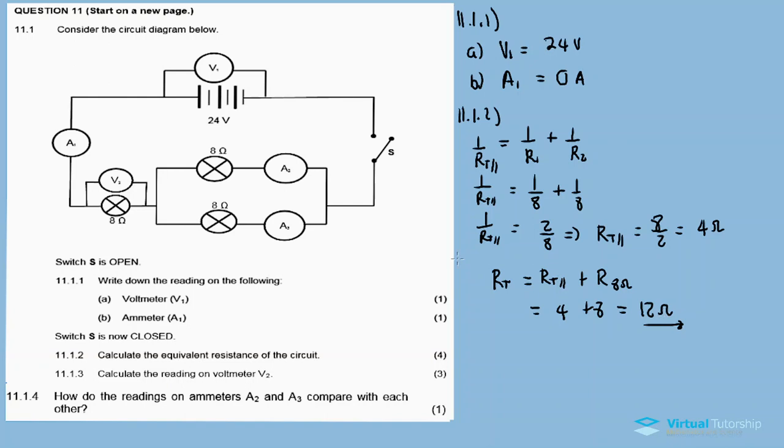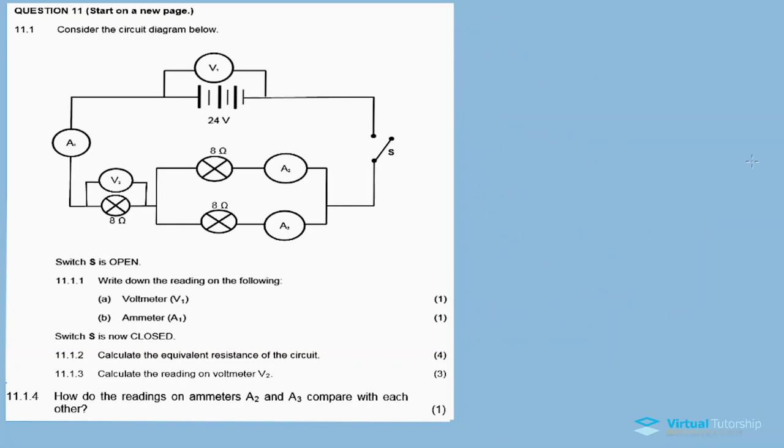11.1.3: Calculate the reading on voltmeter V2. V2 is the voltmeter reading across the 8 ohm bulb. To calculate V2, I'm going to use Ohm's law. V2 is going to be equal to current times the resistance for the 8 ohm bulb. To find V2, we need to calculate the current first.